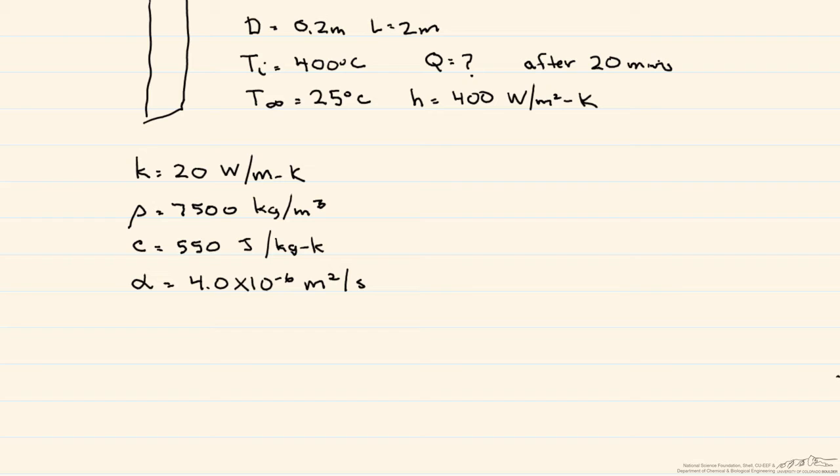So the first thing that you need to do in a transient conduction problem - by the way, how do we know that it's transient? Because we're looking at how a temperature is changing with time. So the first thing we have to do is calculate this Bi number, which is equal for a cylinder to the heat transfer coefficient times R divided by 2, and this whole thing divided by K. So the Bi number will let us know what method of solution we need to use. So if we put in our numbers, we find that we have a Bi number of 1.